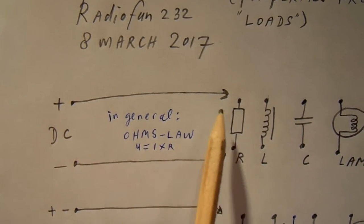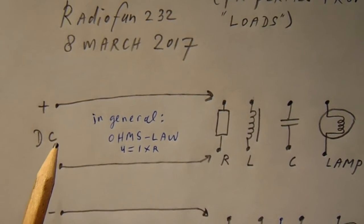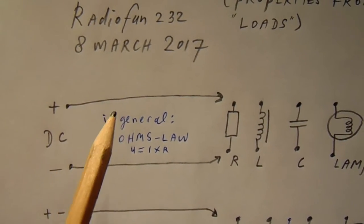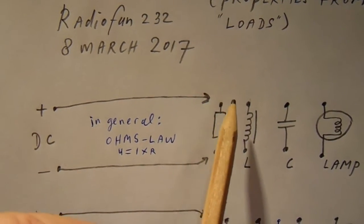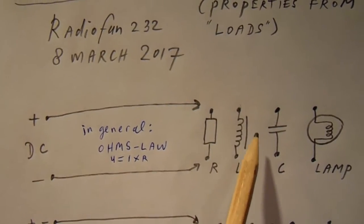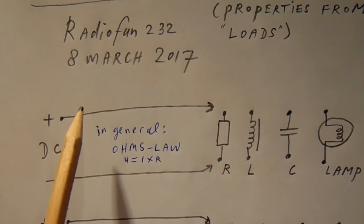Also here, the resistance from the coil obeys in a certain way to Ohm's law. But there is an important thing to tell. When we add voltage and current to a coil, there is a magnetic field here that tries to break the current.